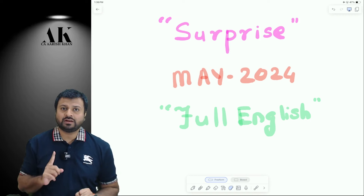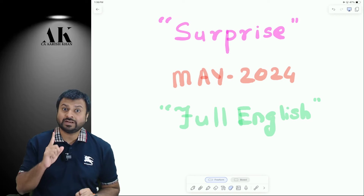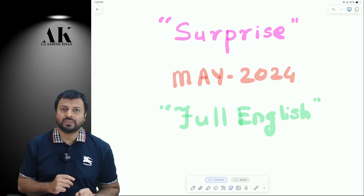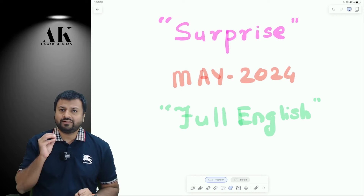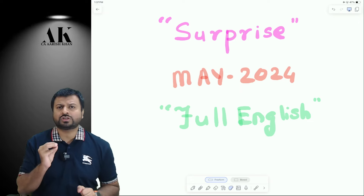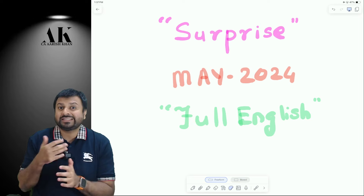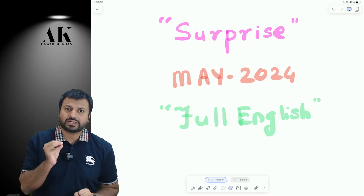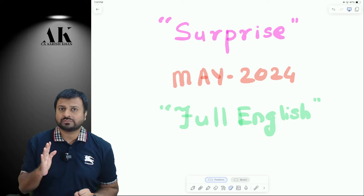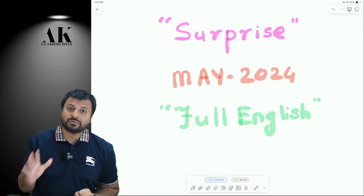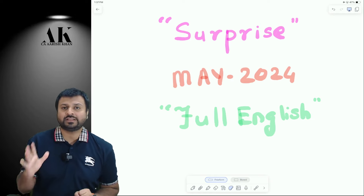Especially in the last few lectures, we have done past seven attempts RTPs, past six to eight attempts mock test papers, and past five to six attempt exam papers. We have done detailed coverage of each and every question from the past papers. The objective of keeping them separately at the end — not mixed with the respective chapter — was so that on the day of examination you can pay special attention to them, because those are the type of questions which generally get asked in the examination.